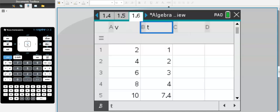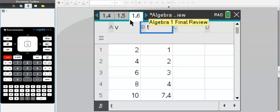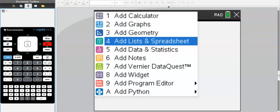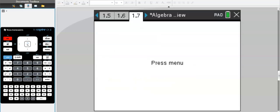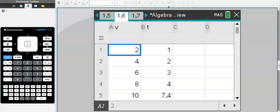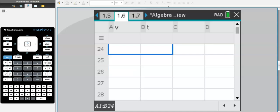Let's keep moving by looking at this list. I got to this list by clicking ctrl, doc, and add list and spreadsheet. I'm going to go back to my list now. I put in some random numbers, but on the exam you'll likely have a set of numbers that the Algebra 1 exam will give you.